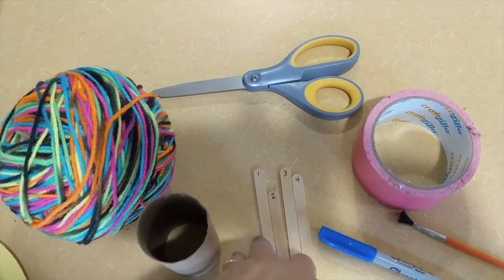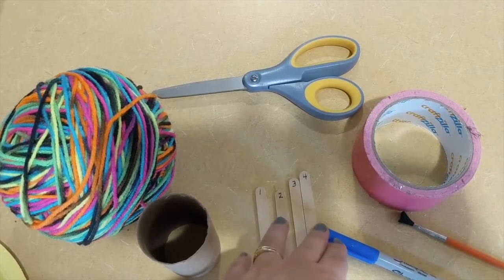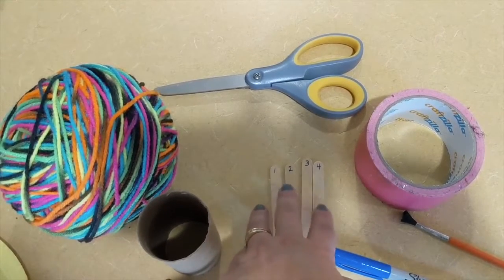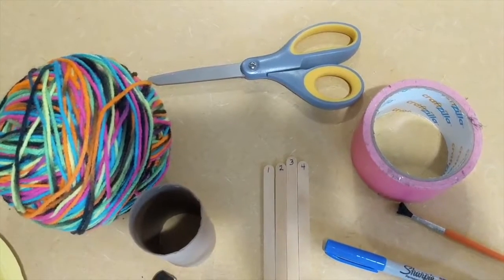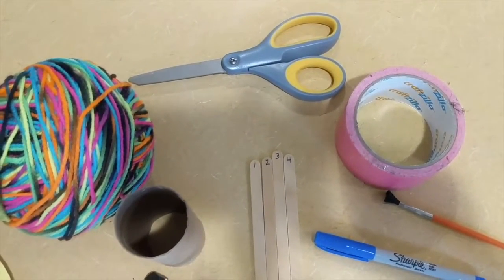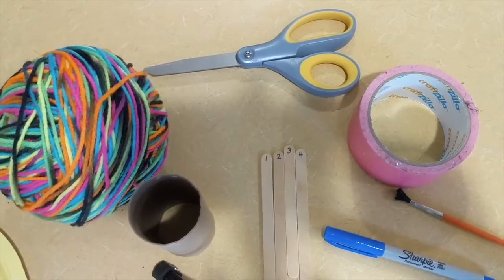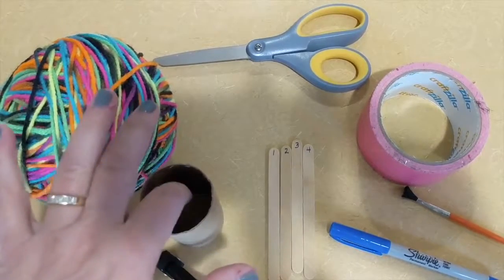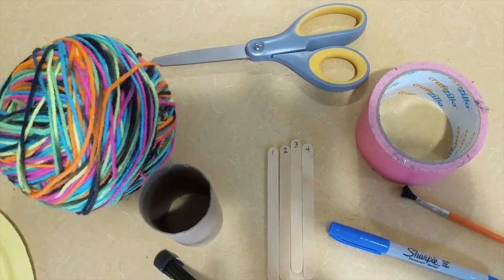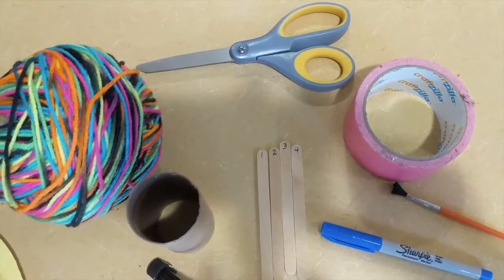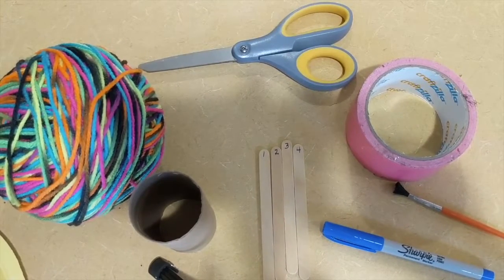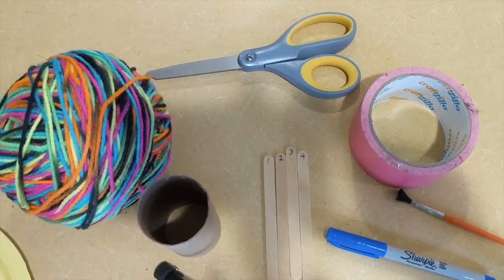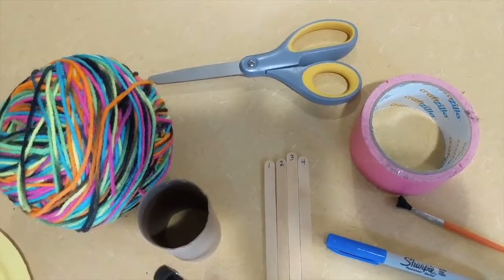So the first thing I did was I labeled my popsicle sticks one to four because those are the pegs that you'll be putting the yarn, wrapping the yarn around, and it just makes it easier so you can see which direction you need to be traveling in with your yarn. And a glue gun is really helpful to glue the popsicle sticks inside the toilet tissue roll. If you don't have a glue gun, regular glue is fine. You'll just have to do this in steps. So I would give it at least an hour of dry time.